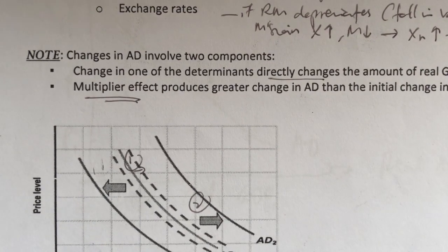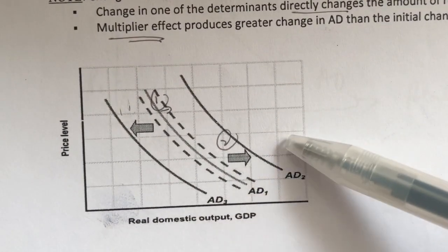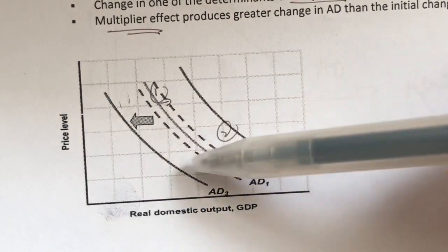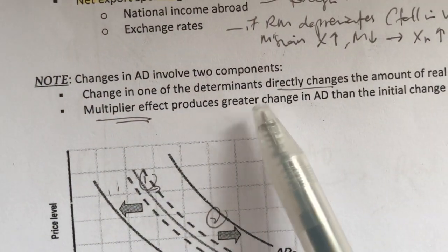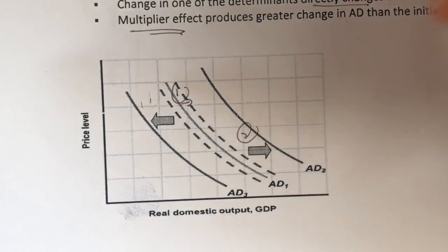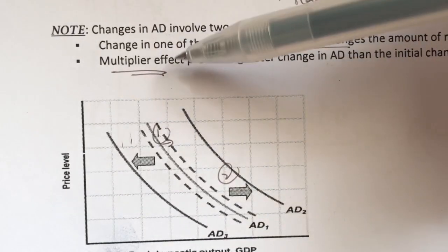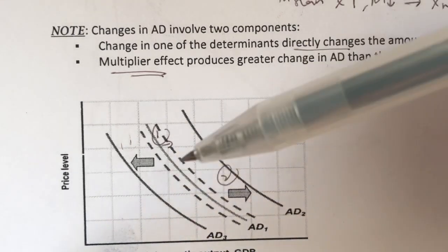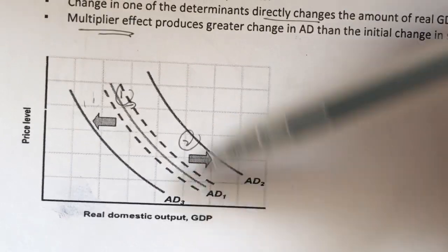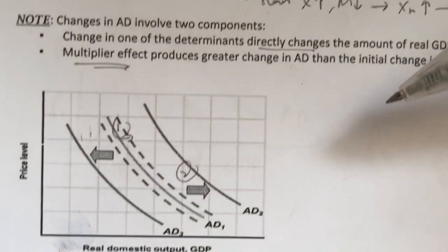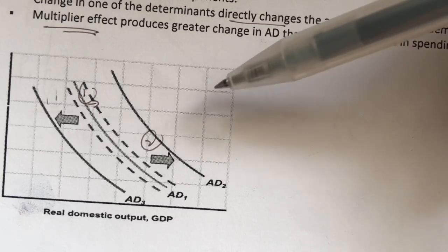We've learned about the multiplier effect — here's how we show it using the aggregate demand curve. When shifts happen, there are actually two movements. The first is the change in the determinant: either C, IG, G, or XN. When that changes, that's the immediate change. But then, due to the multiplier effect — meaning when there's an initial change in spending, it brings about a much larger change in GDP — that is the second change. So the first movement is the initial change, and the second movement is the full effect change. This is basically how we show the multiplier effect using the aggregate demand curve.